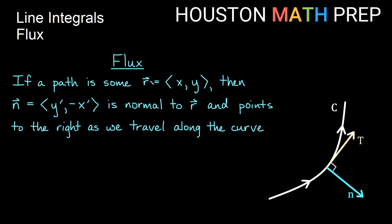If we have some path, some curve through space represented as R equals some vector x comma y, and we look at a vector n defined to be y prime comma negative x prime, that's going to be normal to this original curve and point to the right as we travel along the curve. Our tangent direction is straightforward as we travel along, and this normal direction to the right has the formula y prime comma negative x prime.